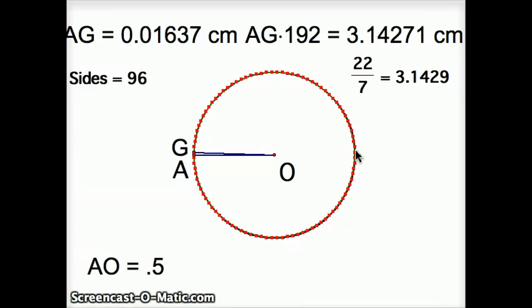Archimedes has accomplished what he wanted. He wanted to show that the circumference of the circle was less than 22 over 7. As you can see, 3.14271 is less than 22 over 7. That's our familiar value of approximation for pi, which is 3.1429.